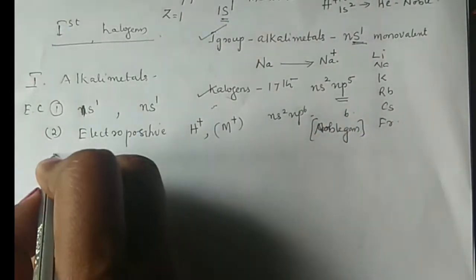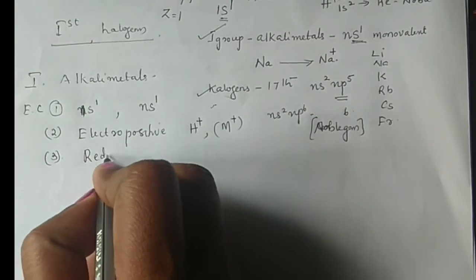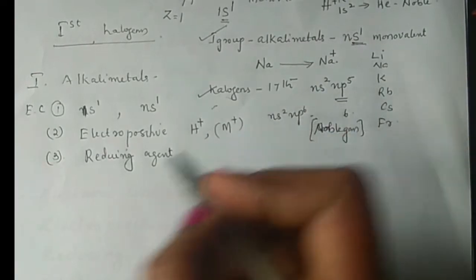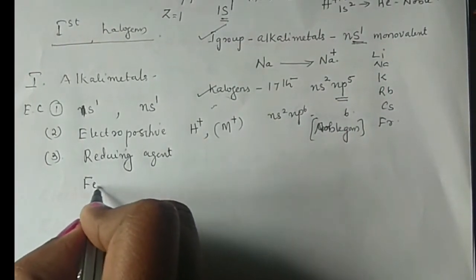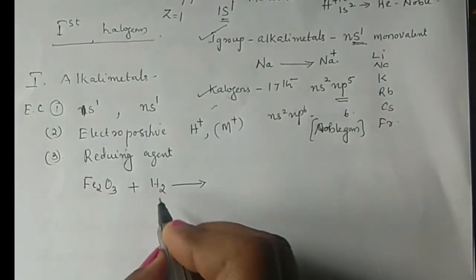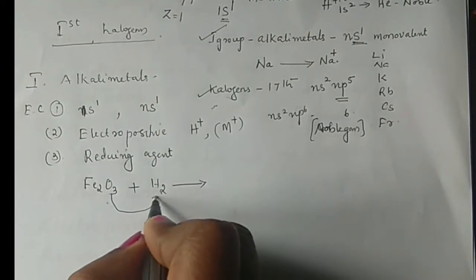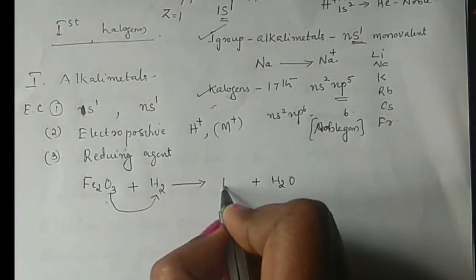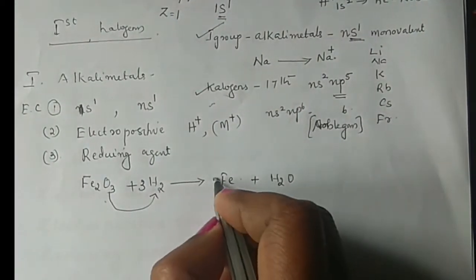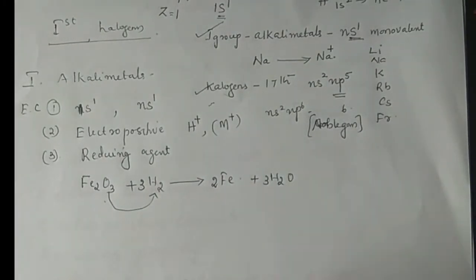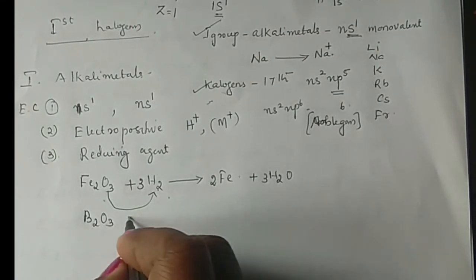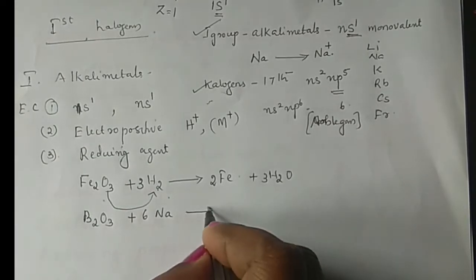Electropositive nature leads to reducing character. Hydrogen is the best reducing agent, similar to alkali metals. For example, hydrogen reduces iron oxide Fe2O3: the reaction gives Fe and H2O. Similarly, hydrogen can reduce B2O3 (boron oxide). Alkali metals like sodium also react as strong reducing agents.